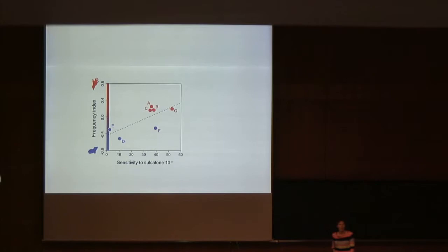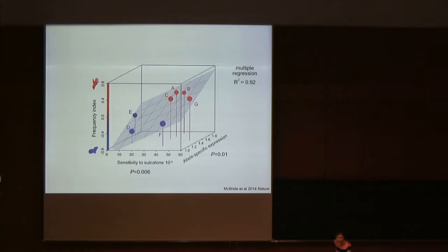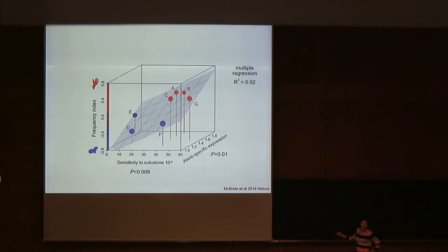If we go back to the suggestive but marginally significant relationship between sensitivity to sulcatone and the frequency index, and add in each allele's specific expression level, the relationship becomes incredibly tight — with an R² value of 0.92, which in behavioral analysis one almost never sees. If we know an allele's sensitivity to sulcatone and the level at which it's expressed, we can exactly and precisely predict its relative frequency in human-preferring F2s, with both factors contributing significantly. This explains allele F — it was highly sensitive to sulcatone but had extremely low expression, so it doesn't matter how sensitive an allele is if it's hardly expressed.